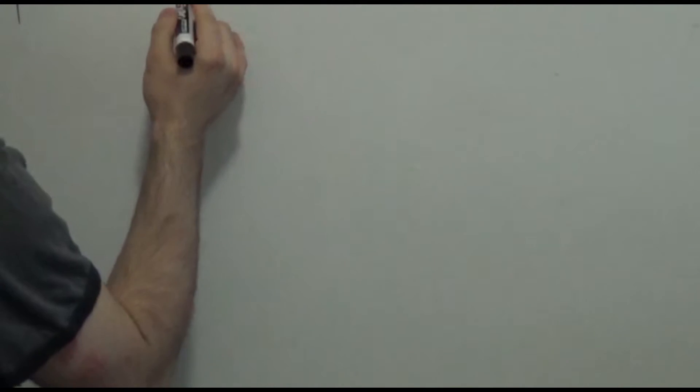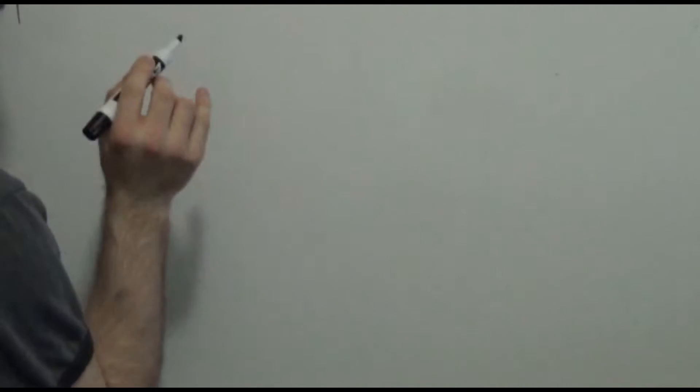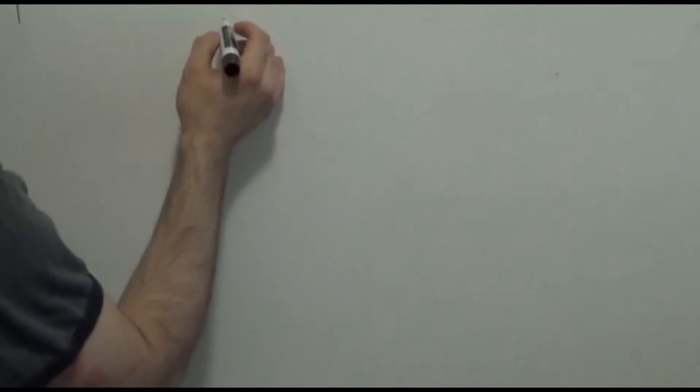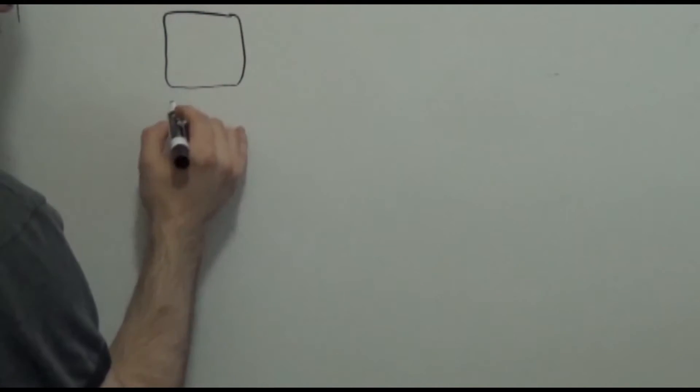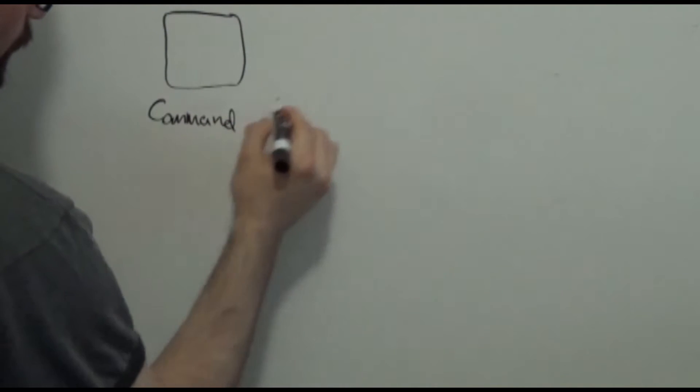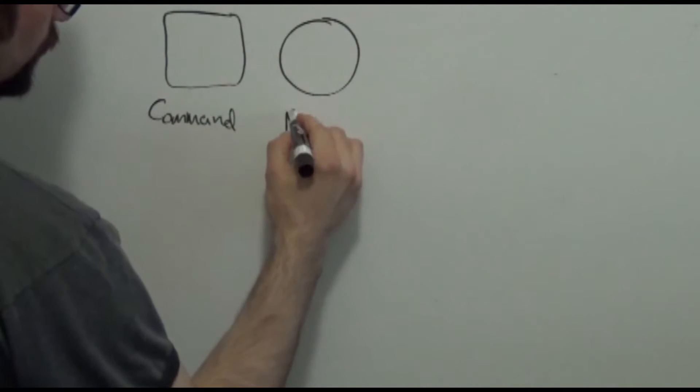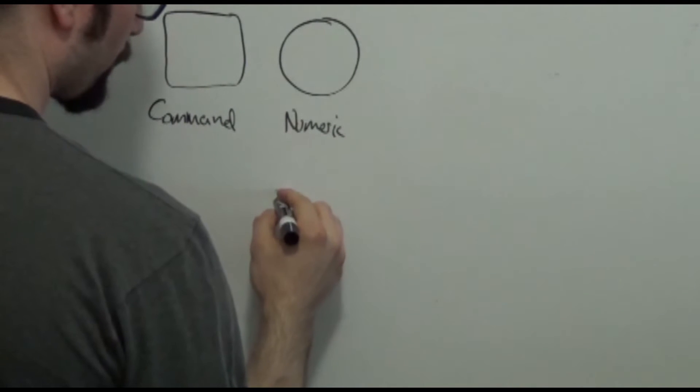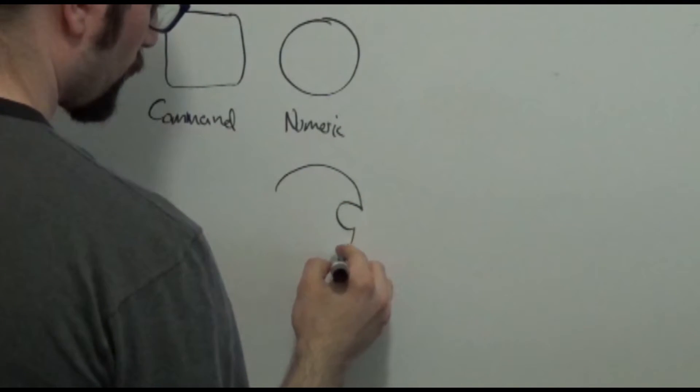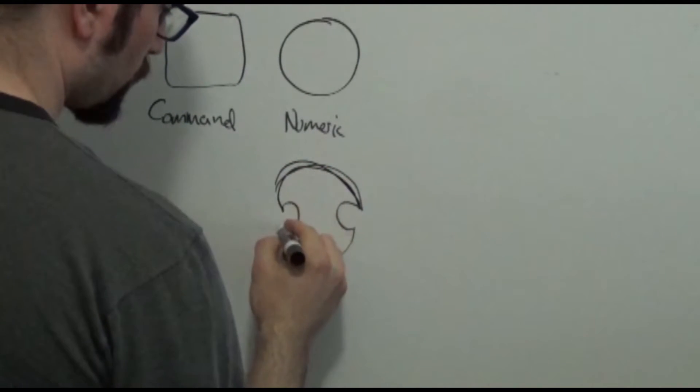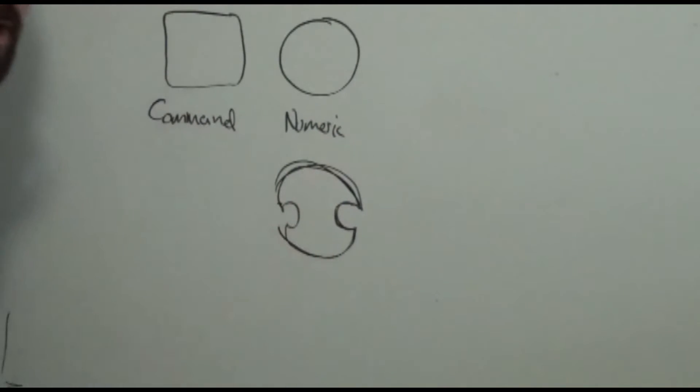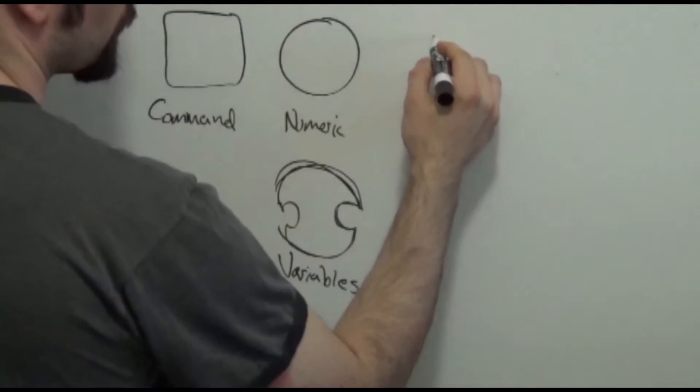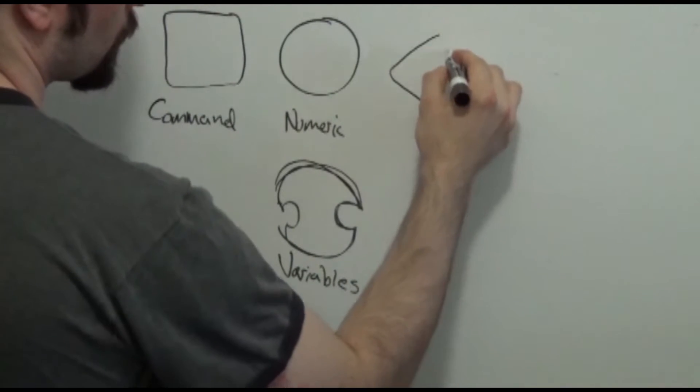Let's talk about types. The first thing to know is there are only four types, and one is sort of a subset of the others. There's a command type, which is rectangular. There's a numeric type, which is circular. There's a subset, which is variables, and they're sort of circular but with these little notches. And then there's booleans, which are diamond shaped. So that's all the types there are.